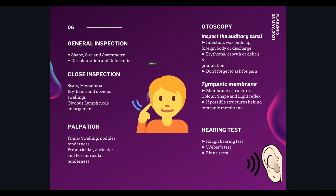Look at the external auditory canal and comment on what you see: any infection, wax build-up, foreign body, or discharge. Look for redness, growth, debris, or granulation. Remember to ask the patient about pain as you stretch the pinna and insert the otoscope. A white growth may be cholesteatoma; debris can indicate otitis externa; visible blood vessels can point to a healing infection.